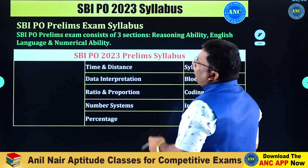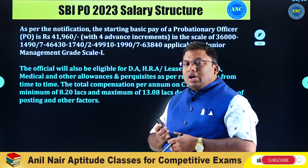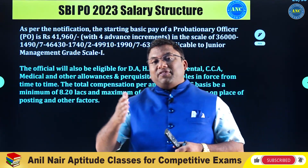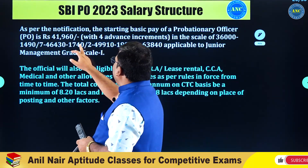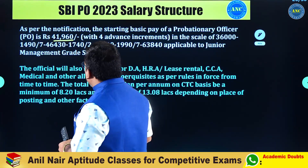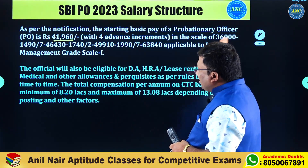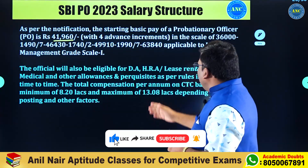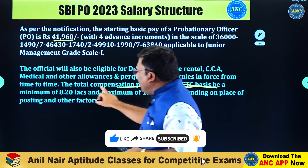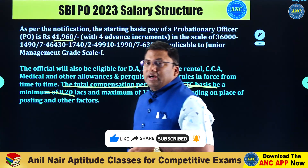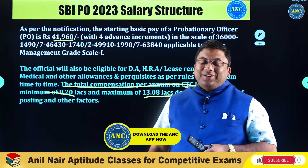It is very important for you to clear this cutoff to get into the mains. On paper, write 65 to 68; after deductions you will get a starting salary of ₹41,960. There is an incremental process depending on which scale you get into. The compensation per annum on CTC is a minimum of 8.2 lakhs and a maximum of 13.08 lakhs.